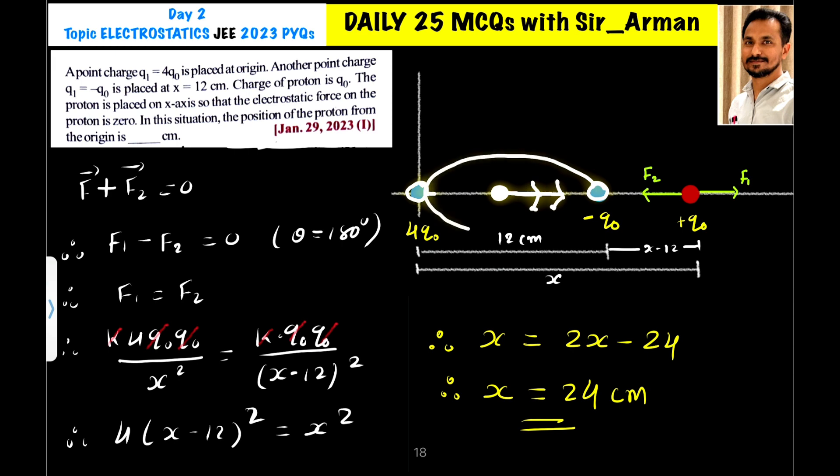Between these two charges, the net force acting on the proton is towards the right, meaning no net force will be zero. It means we need to place it towards the right of this smaller charge.